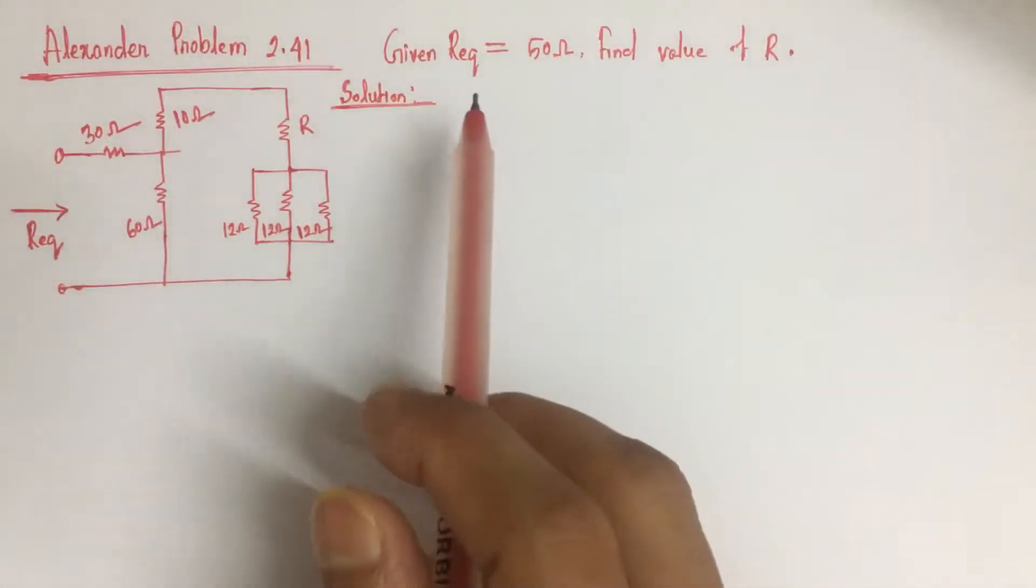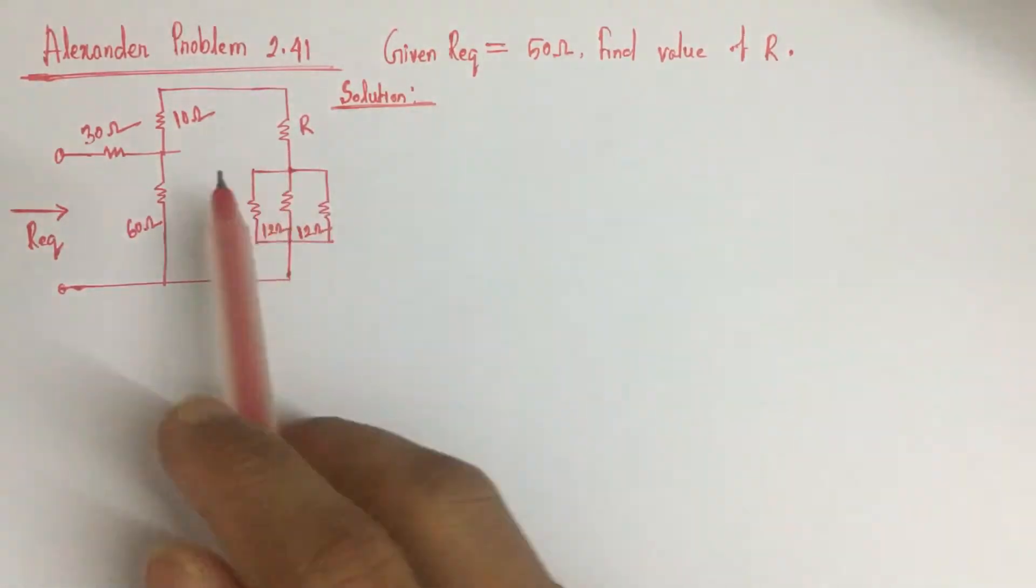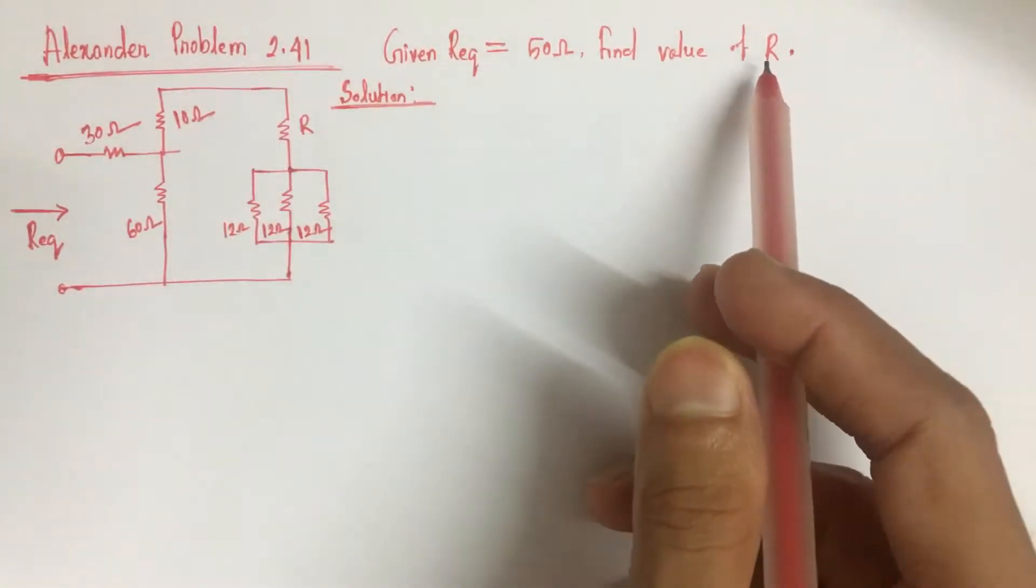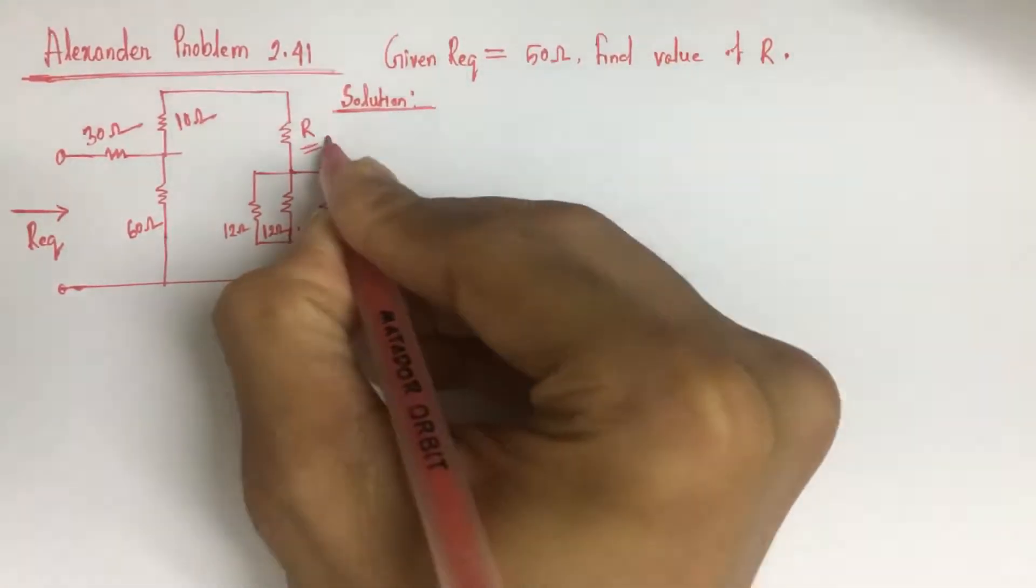Here the equivalent resistance of this circuit is given which is 50 ohm, but we have to identify the value of resistance R.